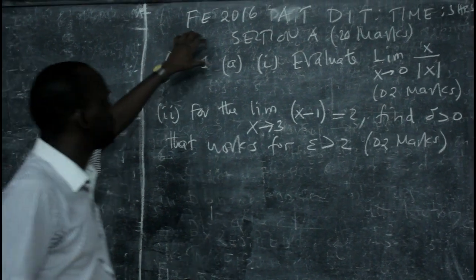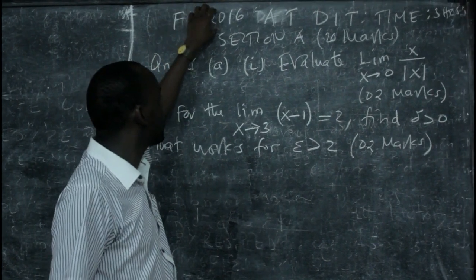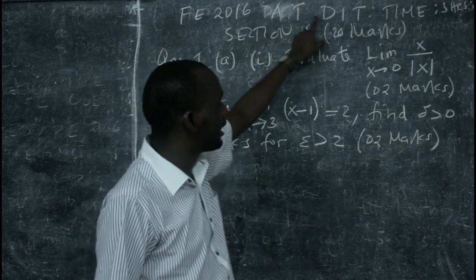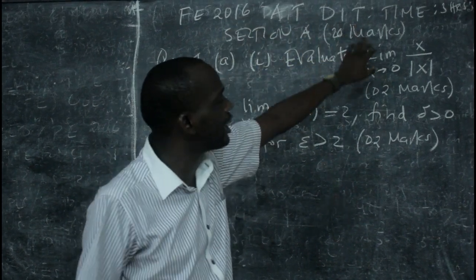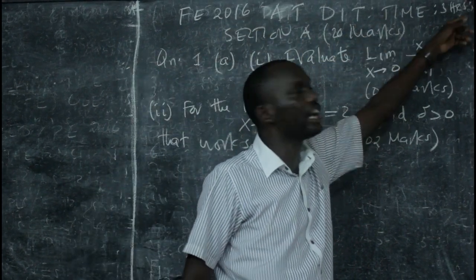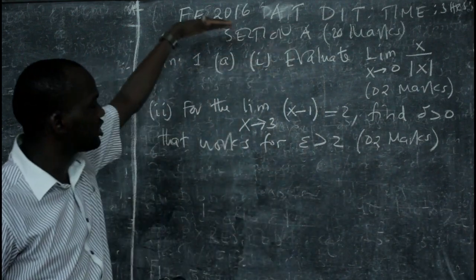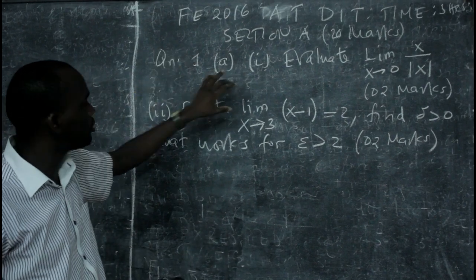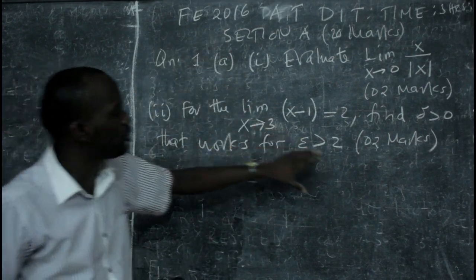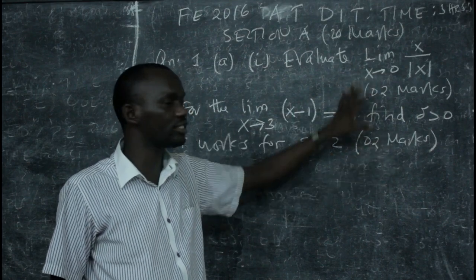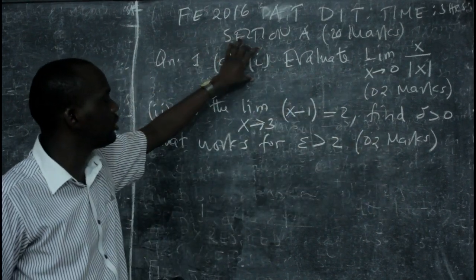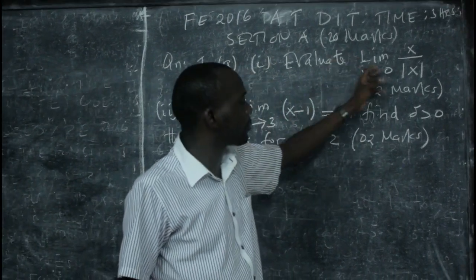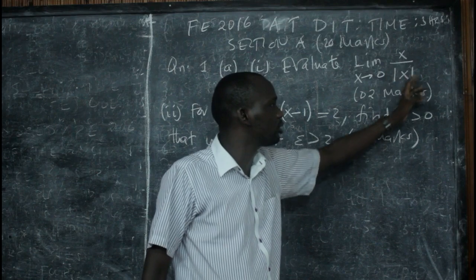This is the final exam question paper for the year 2016 at the Institute of Technology. This is Section A, since the exam consists of Section A and B. We are going to start with Section A. Here we have Question 1, Part A, which comprises four marks — two marks each for two parts. The first part is asking about evaluating the limit of the function as x approaches zero of x over the absolute value of x.